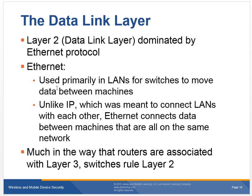Now let's talk about the data link layer — it's dominated by the Ethernet protocol. Ethernet is used primarily in LANs for switches to move data between machines — that would be the network cable you've seen. Unlike IP, which is meant to connect LANs, Ethernet connects data between machines that are all on the same network. Much in the way routers are associated with layer three, switches are with layer two — but as we talked about, a lot of routers and switches are starting to perform the same job now.